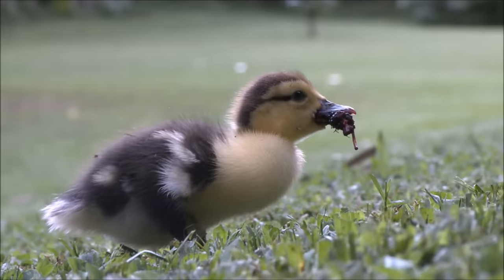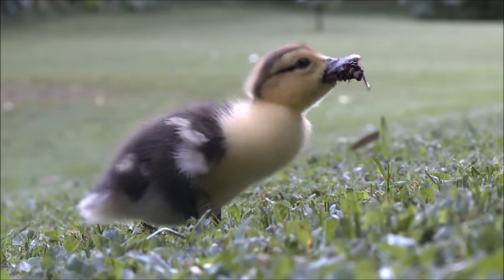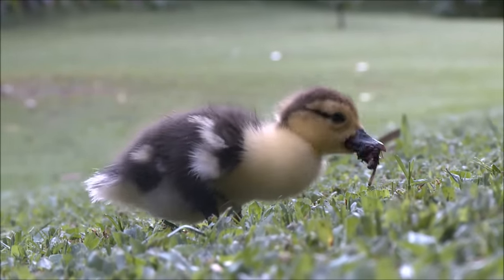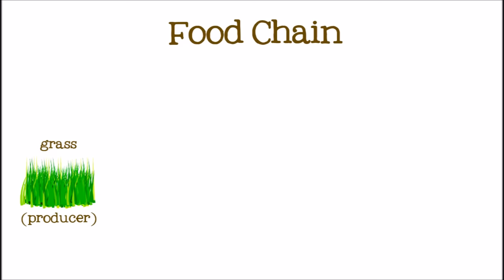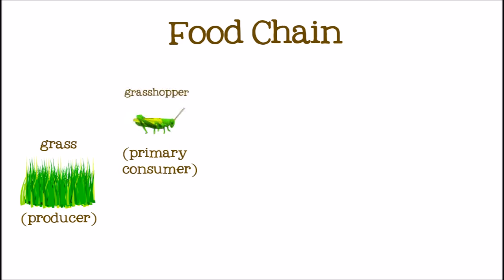Let's take a look at a longer food chain that also begins with grass. This time, let's make our primary consumer a grasshopper. The grasshopper eats the grass, and then gets eaten by a secondary consumer, a bluebird.